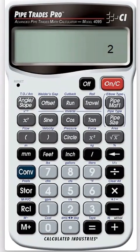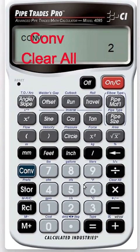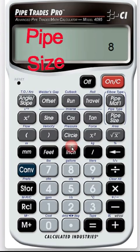So let's get our Pipe Trades Pro, and with the Pipe Trades Pro, let's convert clear. That puts it to the factory settings, and in our problem, we're dealing with 8 inch pipe size.